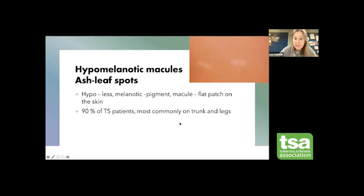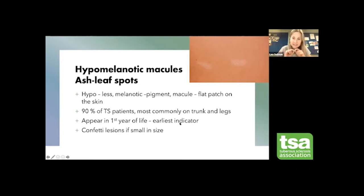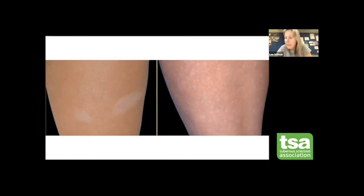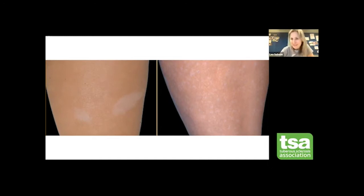Hypomelanotic macules are very common — 90% of TS patients will have them, most commonly on the trunk and legs. They can be present at birth and can be one of the first signs of TS — the earliest indicator. If they are tiny lesions we call them confetti lesions. They can fade in adulthood, but not necessarily. I'd love to hear from any adult patients how they behave on your skin.